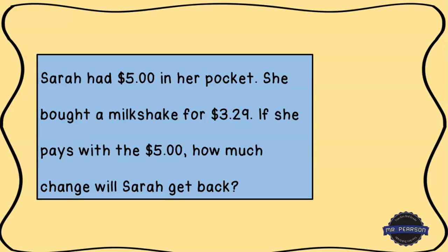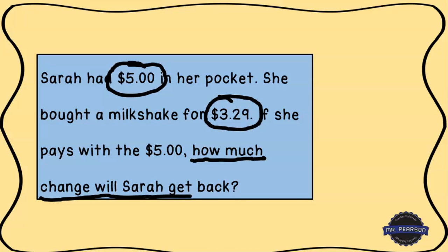Okay, so Sarah had five dollars in her pocket. She bought a milkshake for three dollars and twenty-nine cents. If she pays with the five dollars, how much change will Sarah get back? We're always going to start by circling our numbers — we start with the five dollars Sarah had, and she's going to spend three dollars and twenty-nine cents. That other five dollars just refers to the same amount, so we don't need to do much with that. Next, we underline our question: 'how much change will Sarah get back?' When you see words like 'change' and 'get back' from a larger number, that indicates we're going to do a subtraction problem.